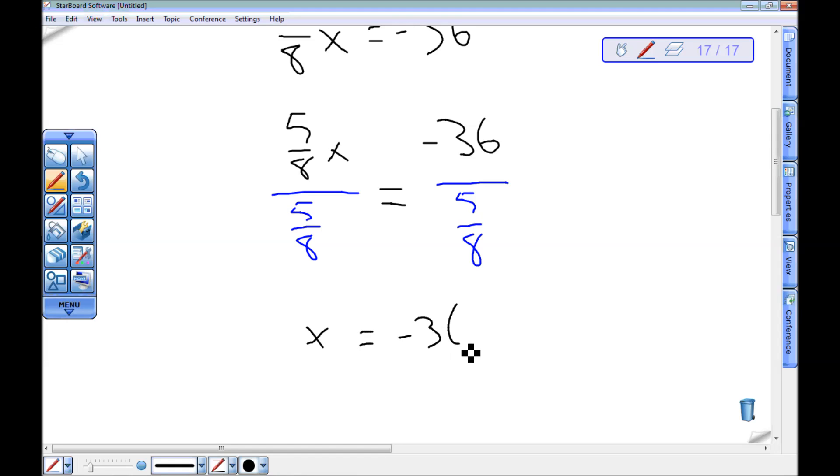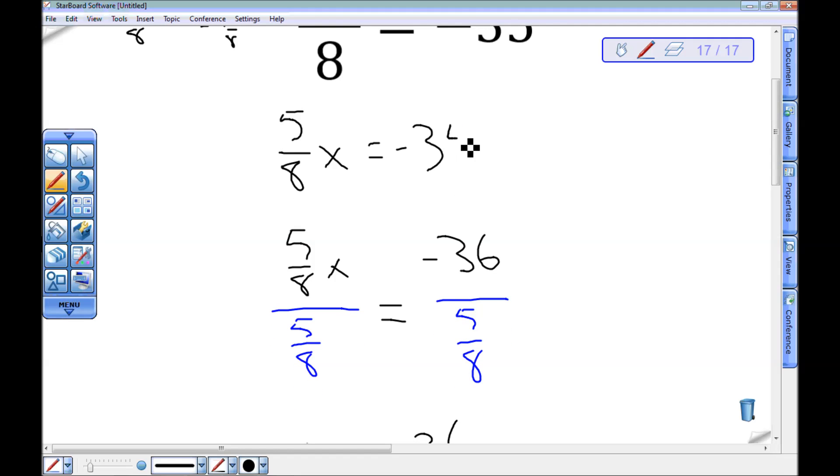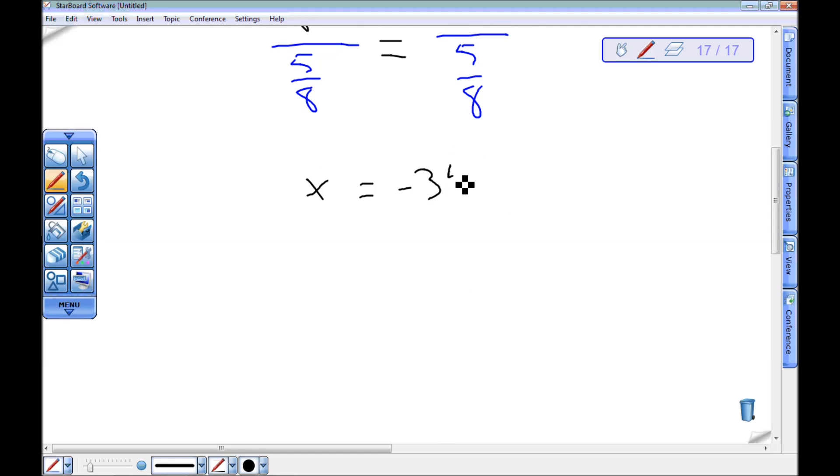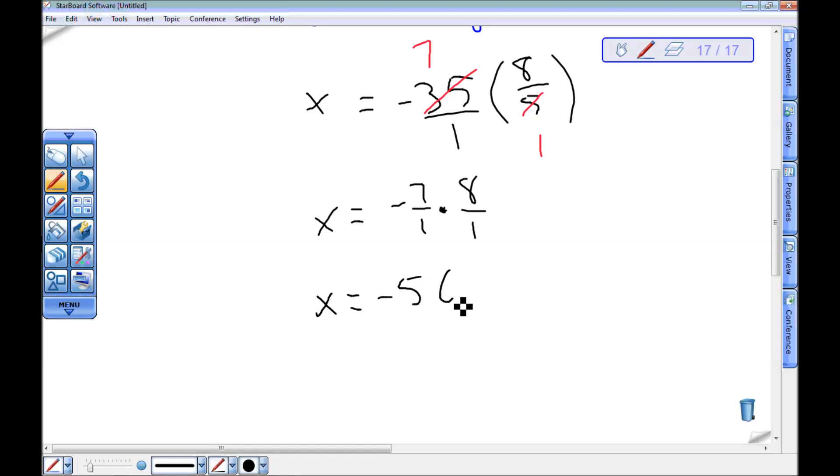This is negative 36 times... oh sorry, 35. I wasn't going to make a sign mistake. Instead, I decided I'd write down the wrong problem to do. Negative 35 times 8 fifths. I can put this over 1. I can do some simplifying. That's a 7, that's a 1. And I've got x equals negative 7 firsts times 8 firsts, which is x equals negative 56 then.